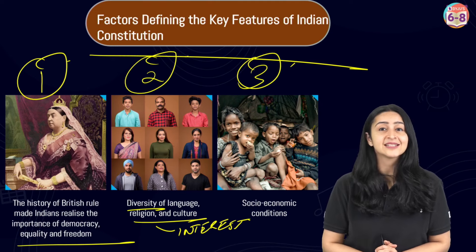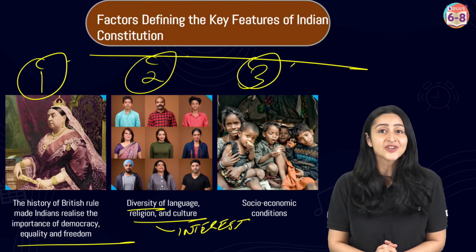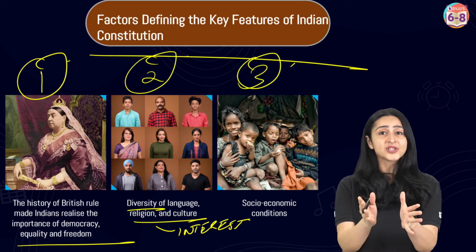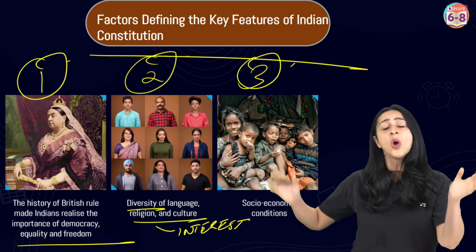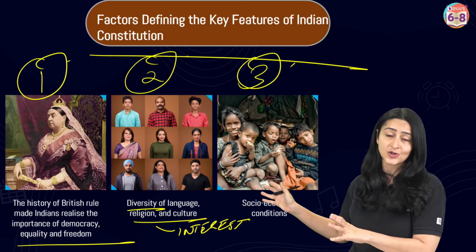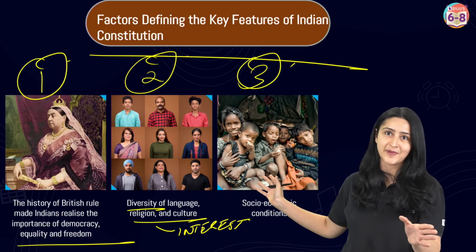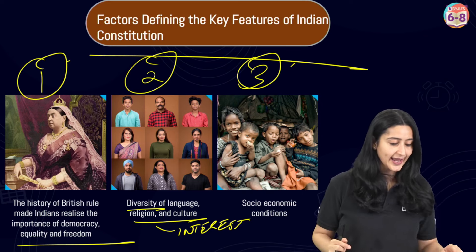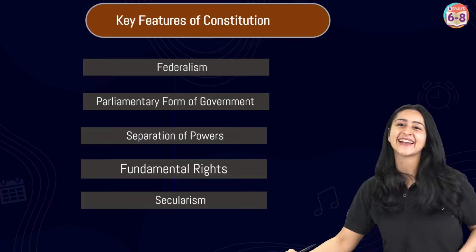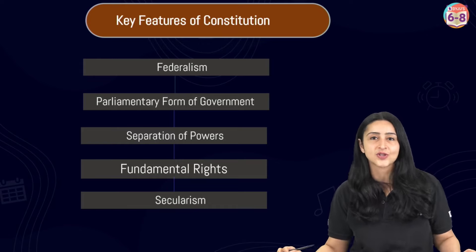Finally, the last factor that influenced the features of the Indian Constitution was the socio-economic condition of India during the time of independence. There was widespread poverty and many injustices in society in the form of caste-based discrimination and lack of access to education. All of these factors greatly influenced the drafting of the Indian Constitution. You may get a question asking what were the factors that led to the drafting — these are the three factors to mention.